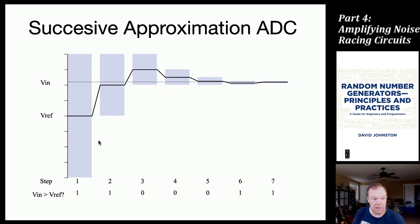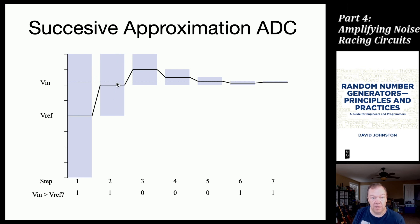You start off with the full range from zero volts to Vmax and some input voltage. You have a reference voltage in the middle and ask: is the input voltage above or below the reference? If it is above, you spit out a one and move the reference range to the upper half. If it was below, you move to the lower half. In this example it's in the upper half. On the next iteration it's still above the reference, so you switch to the upper half of that range, Vref moves to the middle, and now the input is below that, so you spit out a zero, and so on.